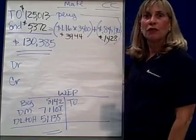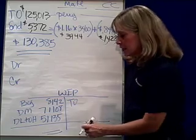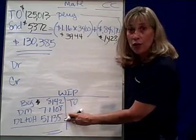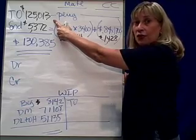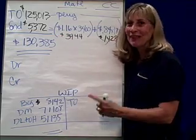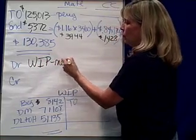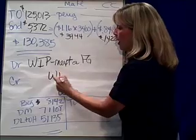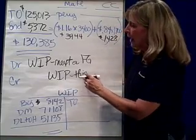So now we're done with the production report. The reason you did this was for the sake of a journal entry. You needed to be able to take the cost assigned in your work-in-process department — beginning, plus direct materials, plus labor, plus overhead — and assign some cost to the goods transferred out, which is $125,013, and assign some cost to ending inventory. You do that journal entry by debiting work in process for the next department, or finished goods if the product is done, and crediting work in process for this department — whether it was extraction, mixing, blending, or something like that.